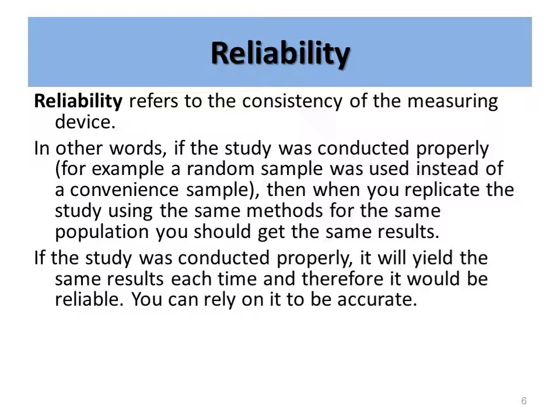Reliability refers to the consistency of the measuring device. In other words, if the study was conducted properly — for example, if a random sample was used instead of a convenient sample — then when you replicate the study using the same methods for the same population, you should get the same results. If you do, the study is reliable. If the study was conducted properly, it will yield the same results each time, and therefore it would be reliable. You can rely on it to be accurate.